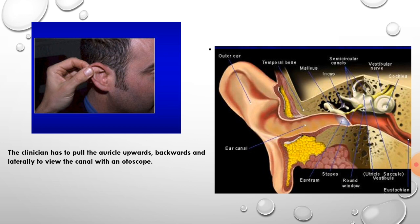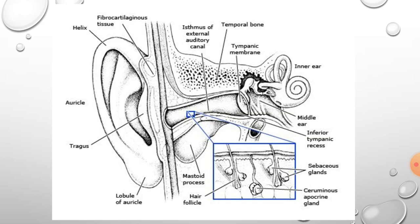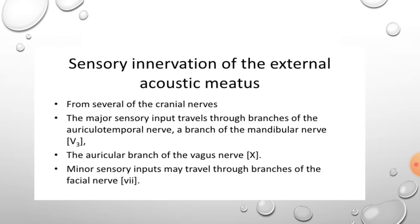In this diagram you can see that the clinician has to pull the auricle upwards, backwards, and laterally to view the canal with an otoscope. The skin of the cartilaginous part of the external auditory meatus has ceruminous and sebaceous glands which produce cerumen or wax.